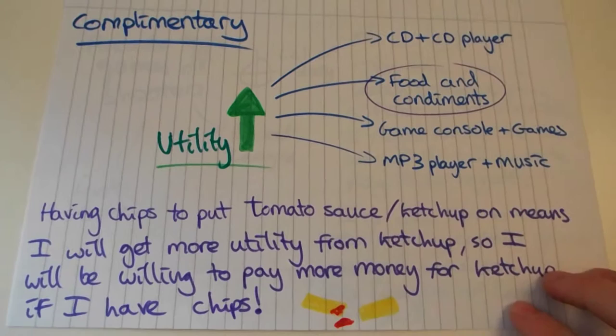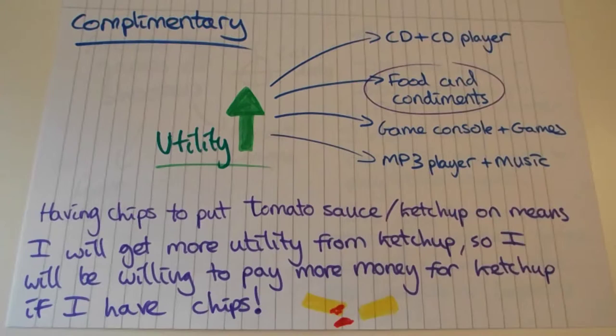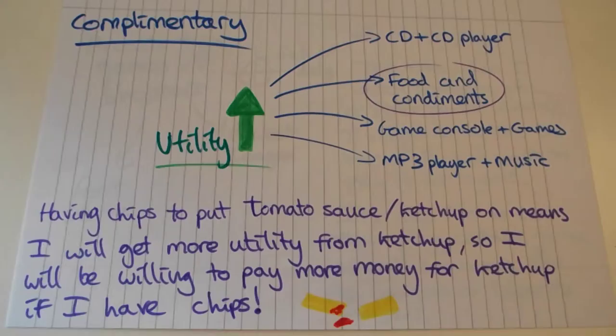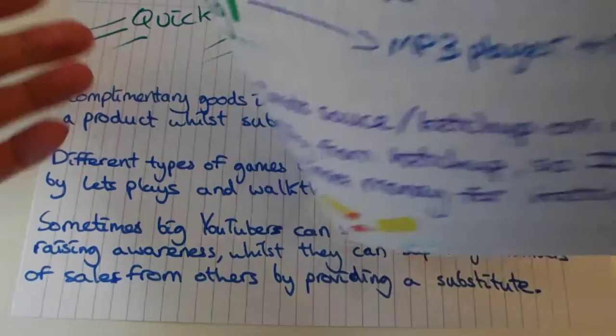On the other hand, we have complementary goods. This is something where if I have it in combination with another good, it actually boosts the utility. So for example, a CD and a CD player. Or if we look at food and condiments, having chips to put tomato sauce or ketchup on means that I'm going to get more utility from the ketchup, so I would be willing to pay more money for the ketchup if I have the chips. Two other examples are game consoles and games to actually play, and MP3 players and music.